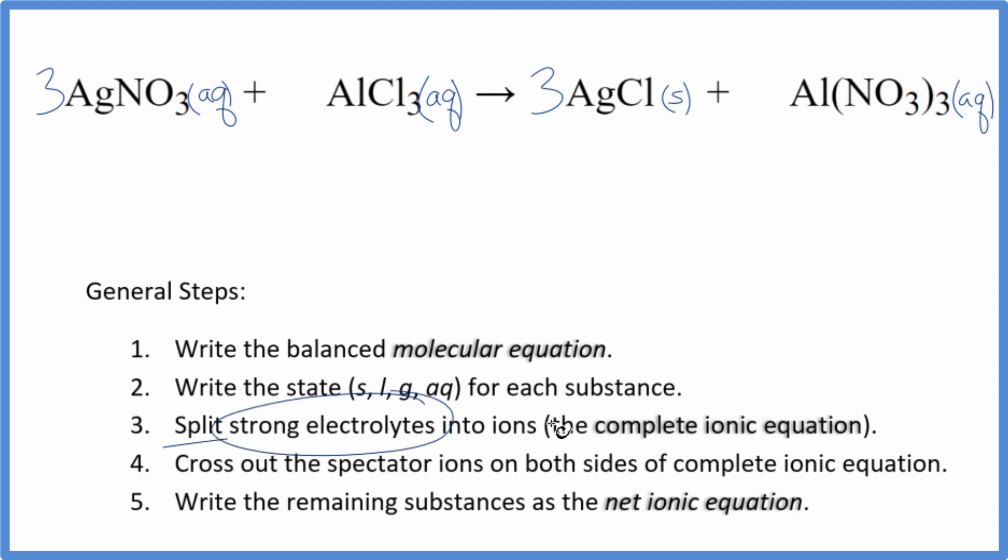Now we can split the strong electrolytes into their ions for the complete ionic equation. Silver is always going to have a 1+ ionic charge. The whole nitrate ion is 1-. So I have three silver ions, and I won't write the states now. Let's write those at the end. And then I also have three of these nitrate ions, NO3-. Good one to remember.